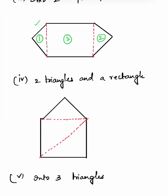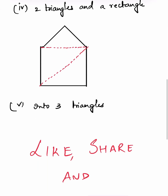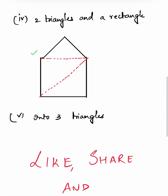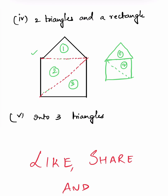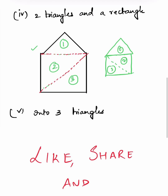For the fifth figure, we have to divide it into three triangles. By drawing these two red lines, the figure is divided into the first, second, and third triangle. Alternatively, we can also divide this figure into three triangles in a different way — either way, by adding the areas of these three triangles, we get the area of the whole figure. Like, share, and subscribe for more interesting maths videos.